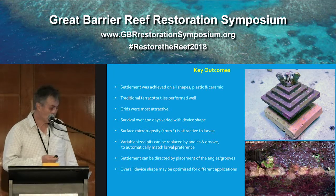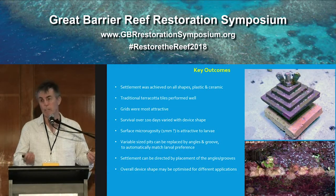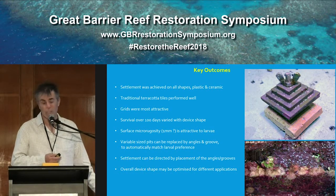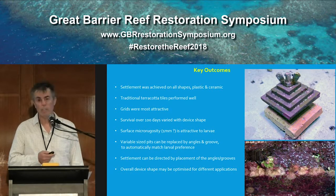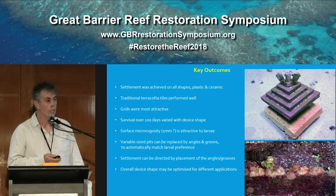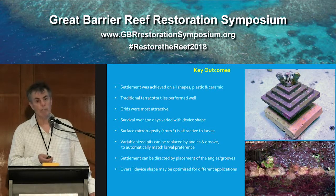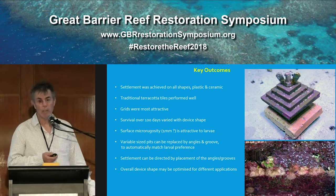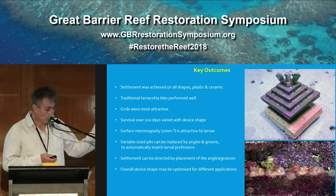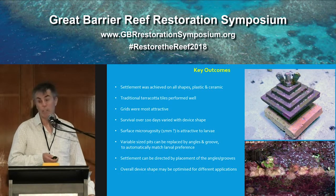Some key outcomes from this research: settlement was achieved on all shapes, plastic and ceramic, and we have other data related to substrate type effects. Golf balls are polyurethane coated; we've also done polypropylene, PVC, and so forth. The plastic used in the 3D printing trial was polylactic acetate, a cornstarch-derived so-called biodegradable — in fact really just compostable — plastic. Traditional terracotta tiles perform pretty well in the middle of the pack and quite well in relative terms for longer-term survival at 100 days.